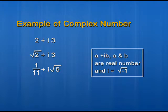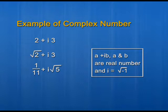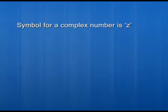In the last example, taking a as the integer 4 and b as the rational number 1/7, we get 4 plus i times 1/7. By choosing a and b as any real numbers, you can form many examples of complex numbers. Complex numbers are denoted by z, so we write z equals a plus ib.